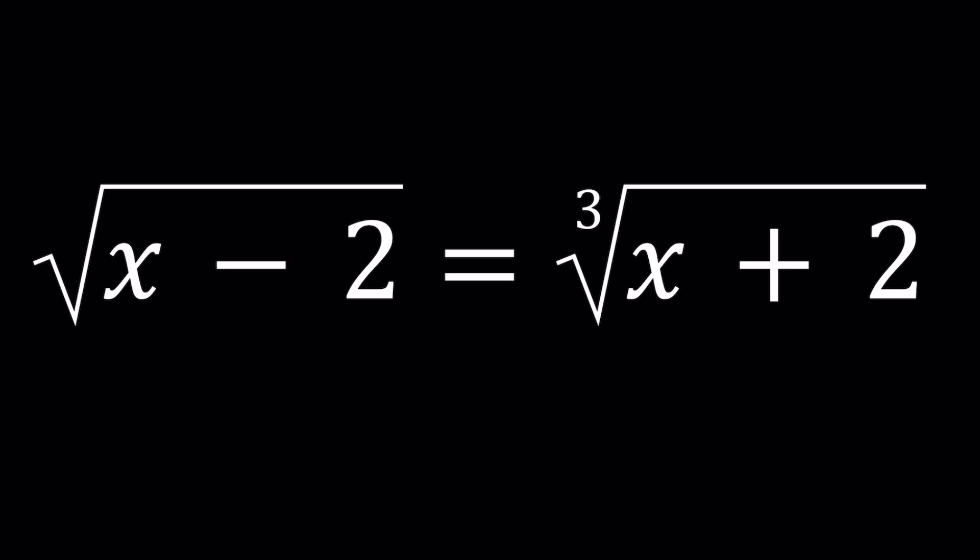Now, obviously, for these kinds of equations, the typical method is getting rid of all the radicals. Since we have a 2 and a 3, and their least common multiple is 6, we can go ahead and raise both sides to the 6th power. That'll eliminate both radicals.